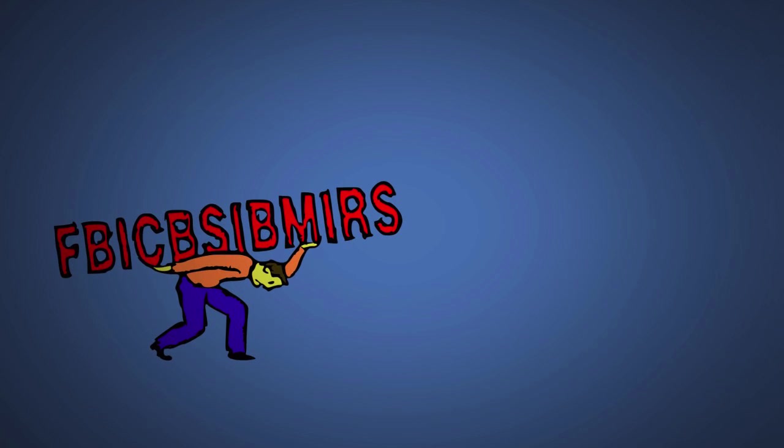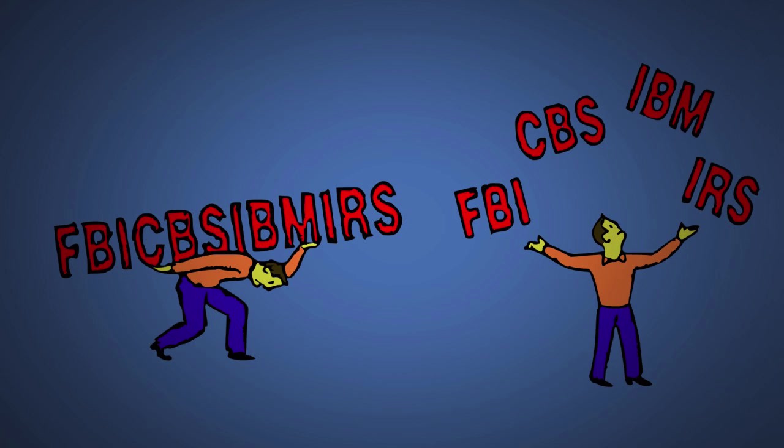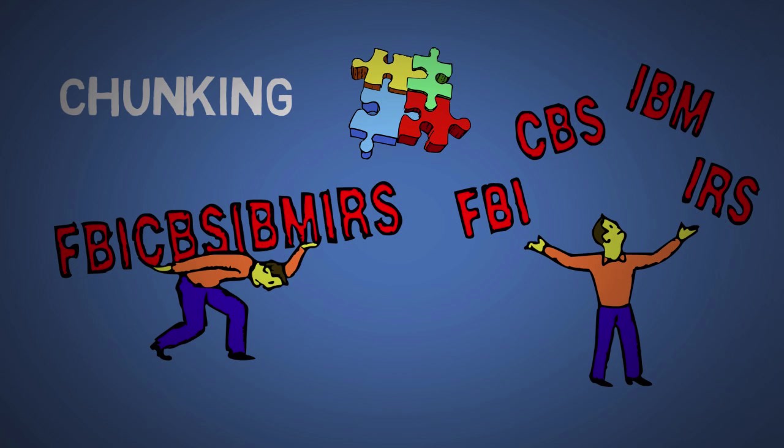Next, what if I asked you to memorize these letters? Well, it would be much easier if you split them into FBI, CBS, IBM, and IRS. This is called chunking. Instead of trying to recall 12 elements, you have now reduced it to 4. Now using the concept of chunking, we're going to learn the peg system.